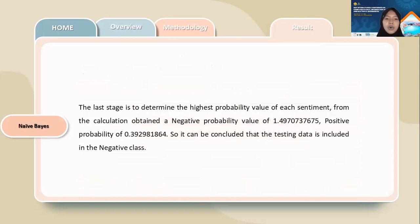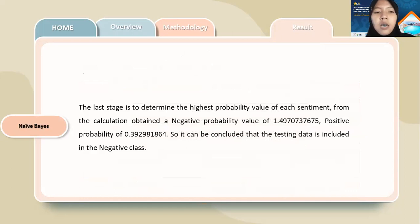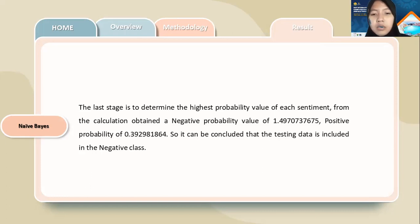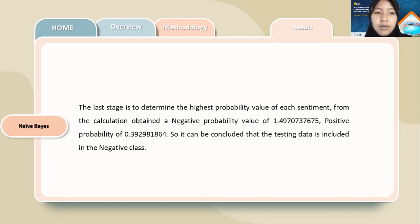The last stage is to determine the highest probability value of each sentiment. From the calculation, the negative probability value is approximately 1.4 and the positive probability is approximately 0.3. So it can be concluded that the testing data is included in the negative class.